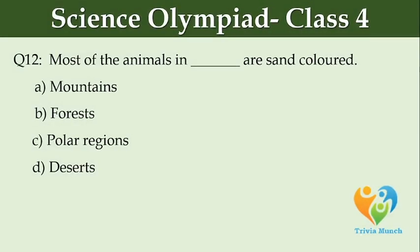Most of the animals in dash are sand-colored. A: Mountains, B: Forests, C: Polar Regions, D: Deserts.